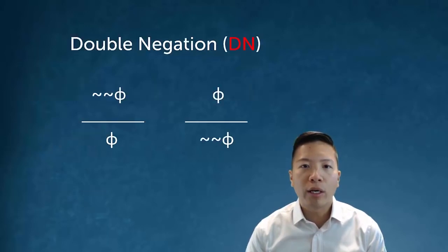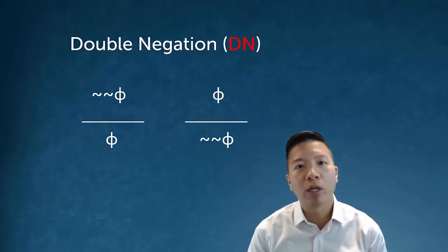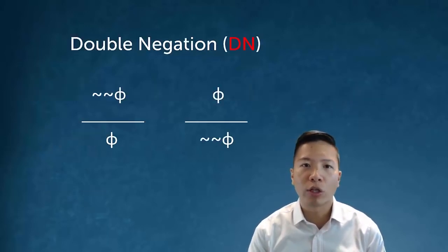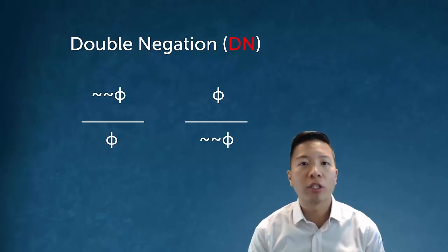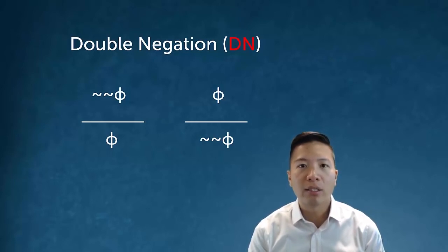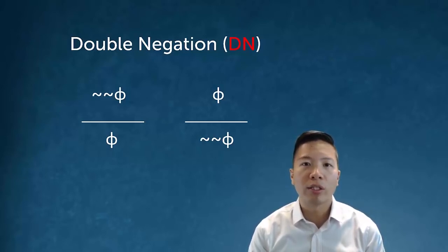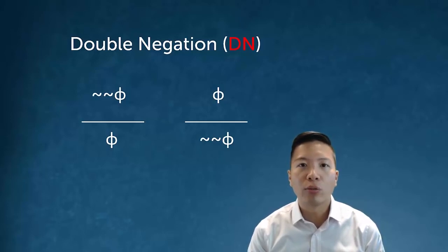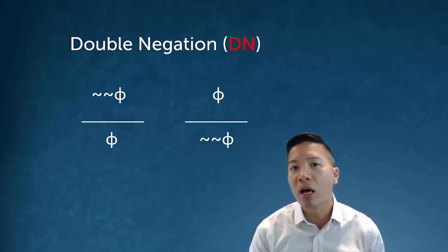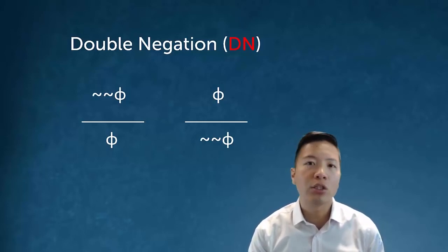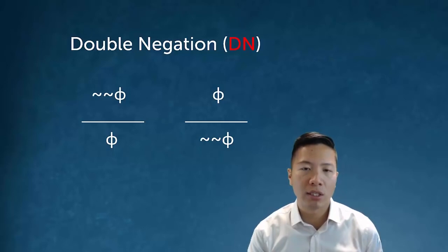We're going to look at two other rules and then get to the structure of derivation. The first is double negation. Double negation basically says that something with two negation signs in front is equivalent to having none, and vice versa. This rule allows us to move from the double negation of any sentence to just the sentence itself.